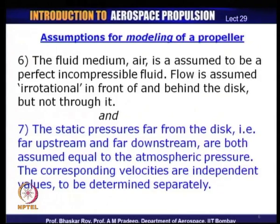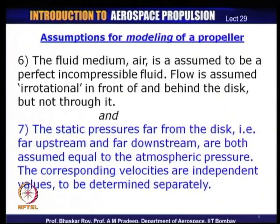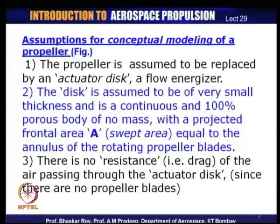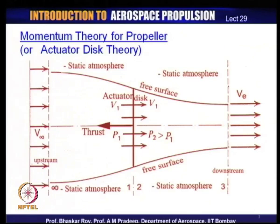The velocities far upstream and far downstream are two independent velocities, different from each other, and these are to be found out or determined separately. The far upstream velocity may be given for a particular problem, and the downstream velocity is to be determined depending on how the actuator disc is modeled. We have now defined the entire mathematical and physical model in front of us.